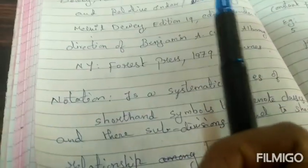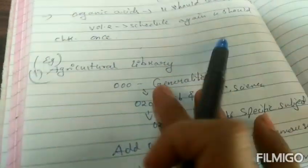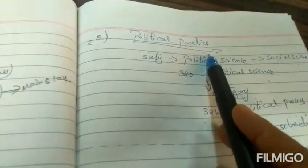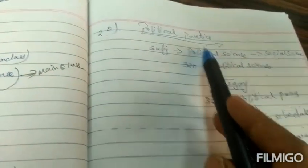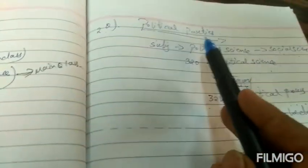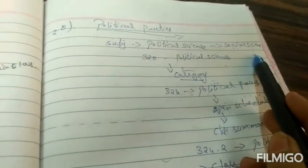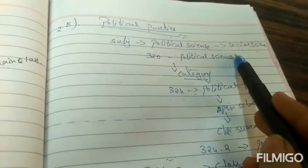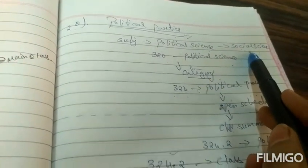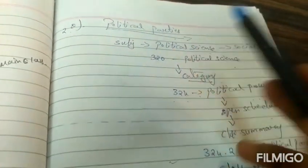I'll show you just one example so that you will understand in a very clear manner. I'm not going to show you how it is searched, but the way it's going to be. For example, you can take this one example: political parties. Where will it come? First you need to go to the main classes. In the main class in social science, you can find political parties.